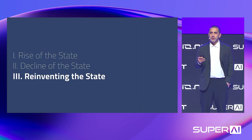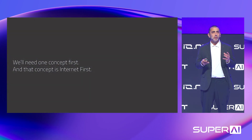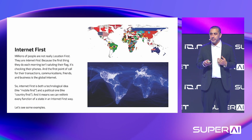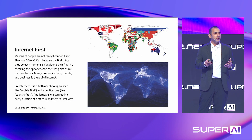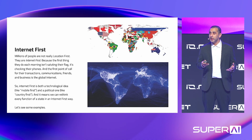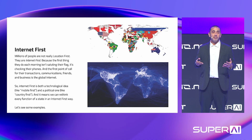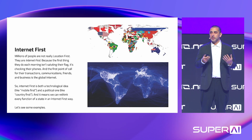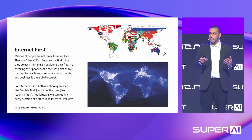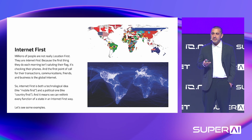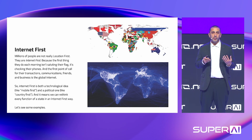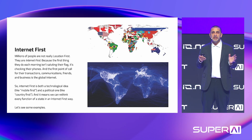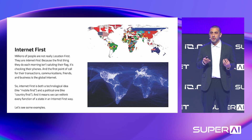Let's get to part three: reinventing the state. We need one concept first, and that's 'internet first.' What does internet first mean? It basically says that the first thing hundreds of millions — billions — of people do every day is not salute the flag, they're checking their phones. 99% of their transactions are online, their communications are online, their business is online, their customers, friends, and many relationships are online. In many ways, internet first is both a political thing and a technological thing. Using this lens, we can ask: what is the internet-first version of this thing?